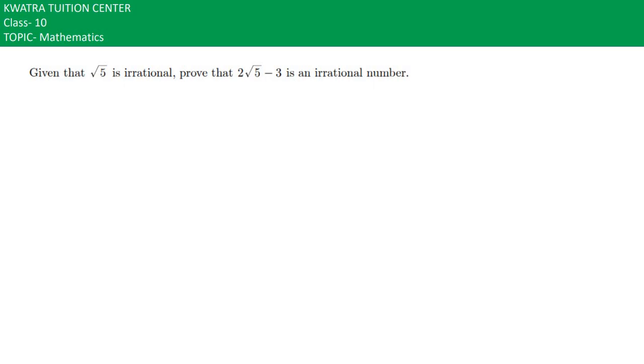Here in the sixth part it says: given that √5 is irrational, prove that 2√5 - 3 is an irrational number. So what do we have to prove here? That 2√5 - 3 is an irrational number.